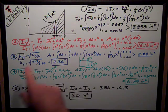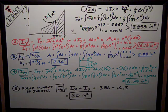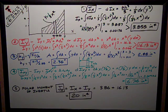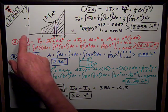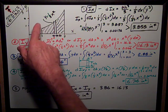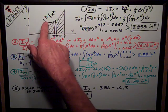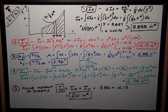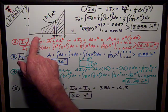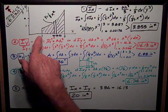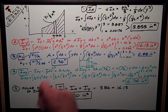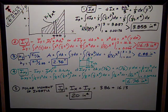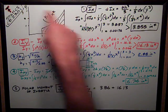We're going to do some integration for statics, CE 2301. We're going to determine moments of inertia and product of inertia of a shaded area that is defined by the curve y = 1/3 x². It goes from x = 1 to x = 3 on the horizontal axis. At x = 3, y = 3.